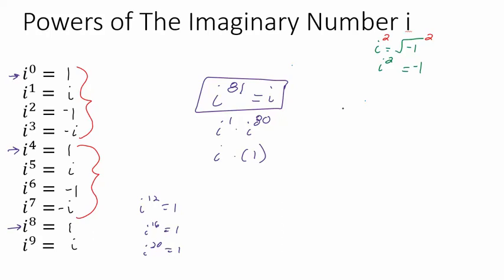Let's try i to the 53rd. Find the biggest number less than 53 that's divisible by 4. 53 is not divisible by 4, but 52 is. So we have i to the 1st times i to the 52nd. Since 52 is divisible by 4, i to the 52nd is 1, and we're left with just i.